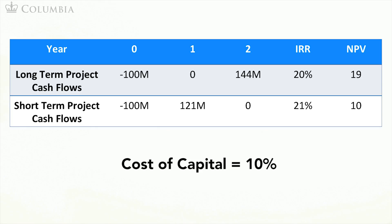The IRRs and NPVs of these projects are shown in the table. As you see, this is another situation in which the IRR and NPV are giving you different recommendations. The long-term project has a higher NPV but a lower IRR.